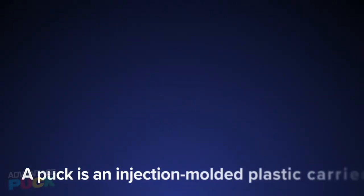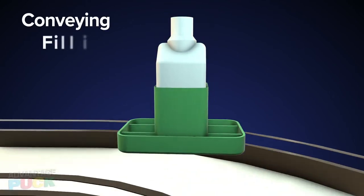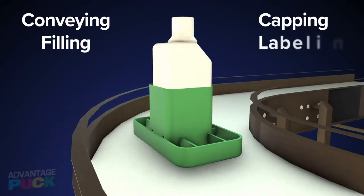A Puck is an injection molded plastic carrier that holds and stabilizes your container during conveying, filling, capping and labeling processes.